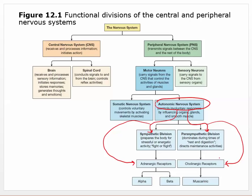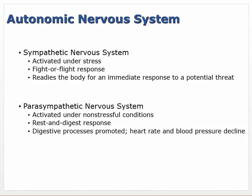Acetylcholine is released onto what we call cholinergic receptors. Norepinephrine is released in the sympathetic division onto adrenergic receptors — further divided into alpha, beta, we'll talk about that later. Cholinergic receptors include muscarinic and nicotinic. Nicotinic receptors are what we see at the neuromuscular junction and also at the preganglionic synapse. We're really interested in the effects of these drugs, and it helps to understand why they're categorized the way they are.